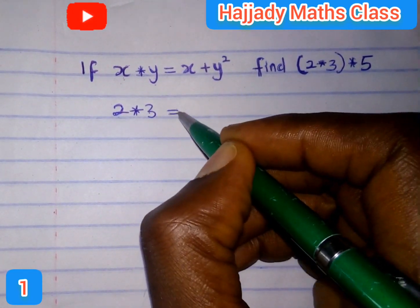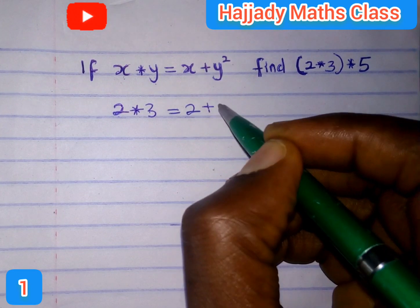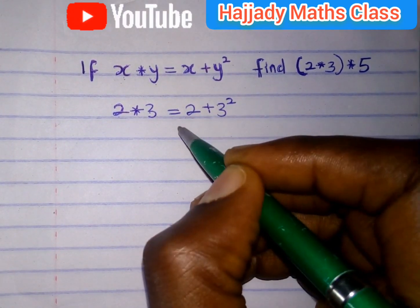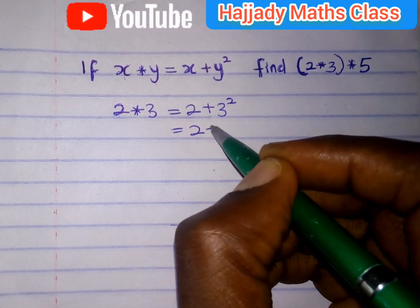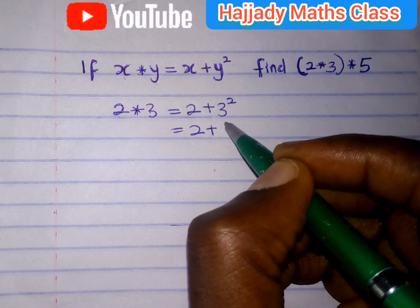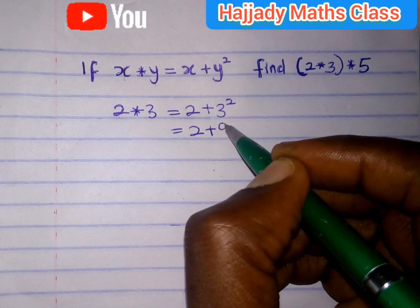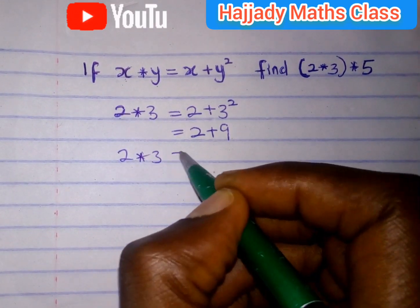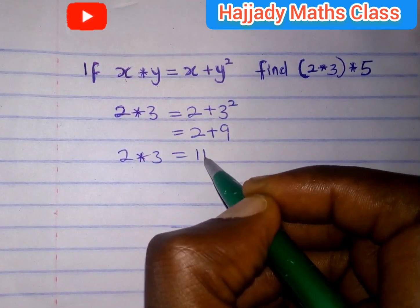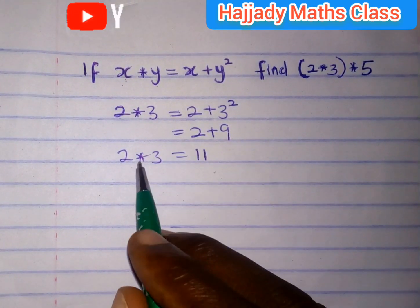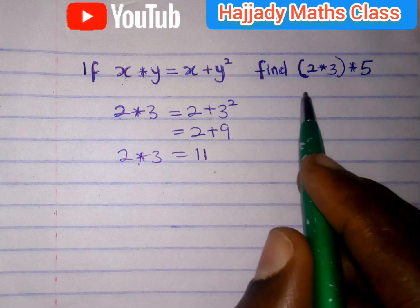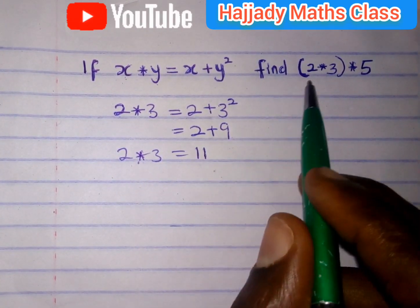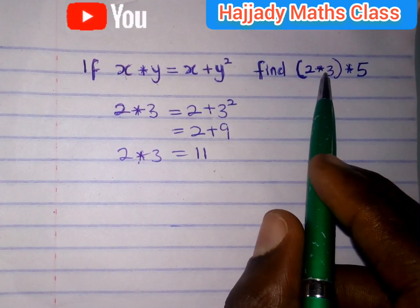So, in this case, we have 2 plus 3 raised to power 2. So, 2 plus 3 raised to power 2 is the same as 11 — this operation gives 11. So, that means this operation gives 11.